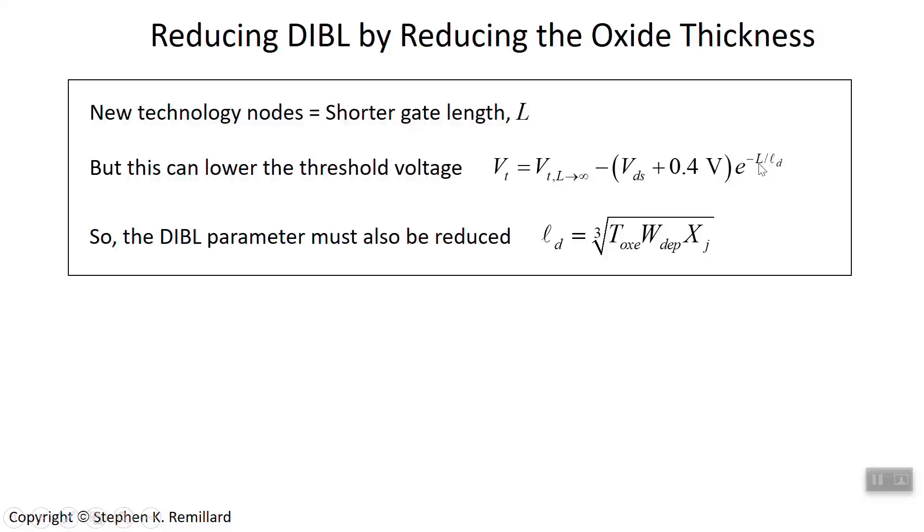As this gate length gets short enough, this exponential term becomes something that can't be neglected. We need to have the rest of this exponential be as small as possible so that we're still taking e to the minus big number.